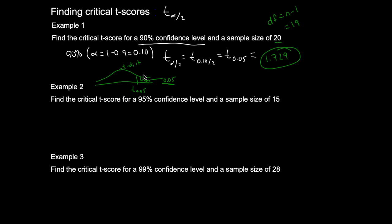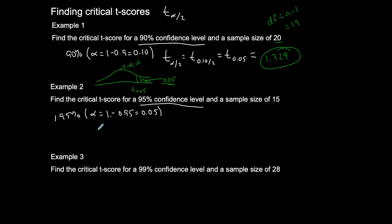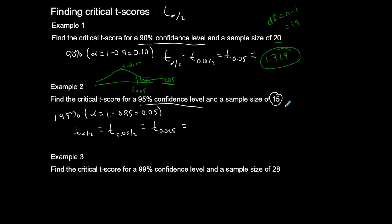A 95% confidence level gives alpha = 1 minus 0.95 = 0.05. So t of alpha over 2 is t of 0.05 over 2, which is t of 0.025. This is very similar to what we did with the critical z-score. Sample size is 15, so degrees of freedom = 15 minus 1 = 14.